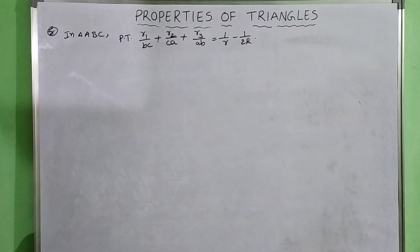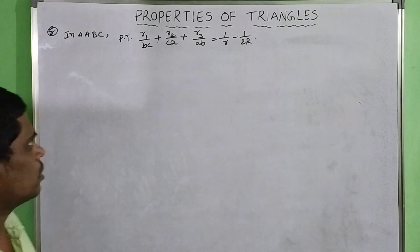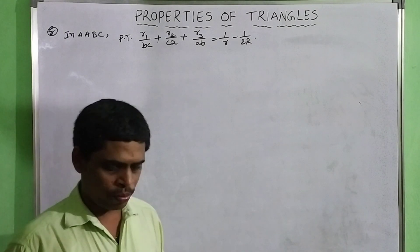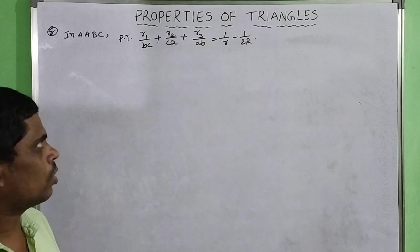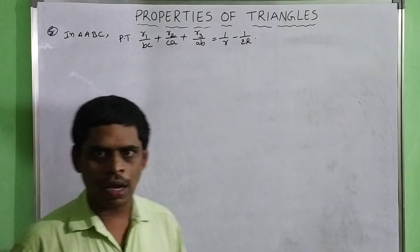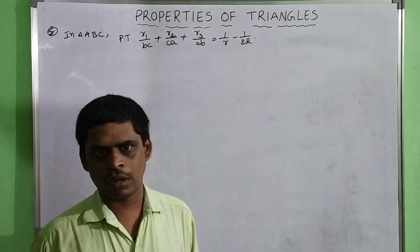The problem is: in triangle ABC, prove that R1/BC plus R2/CA plus R3/AB equals 1/R minus 1/2R.